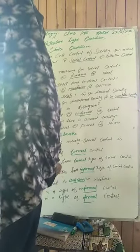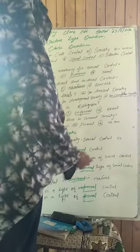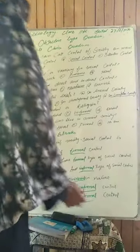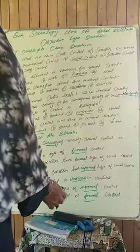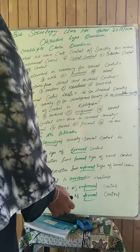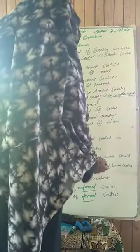Number four: traditional societies have blank type of control. Joh traditional societies hoti hain, un mein kis type of control hota hai? In mein informal type of control hota hai.